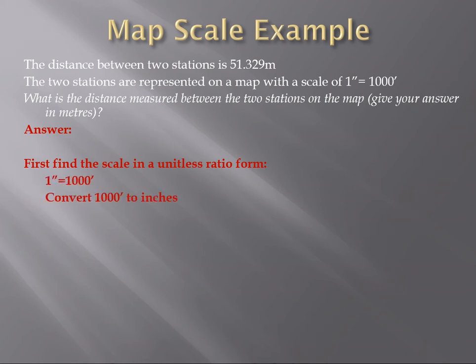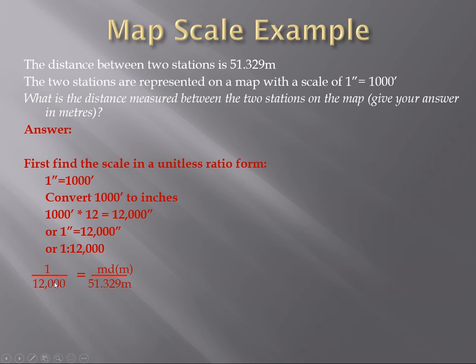So we've got to find the scale and the unitless ratio. Right there, we've got to convert the 1000 feet to inches. So 1000 feet times 12 equals 12,000 inches. So 1 inch equals 12,000 inches, or 1 to 12,000. So we put it into our representative fraction. We have 51.329 meters multiplied by 1 divided by 12,000, and that gives us this value in meters. So that's what we're going to show on the map. That's what we're going to see between the two.